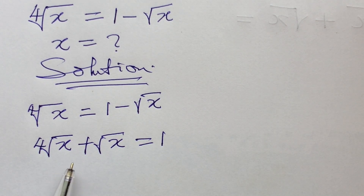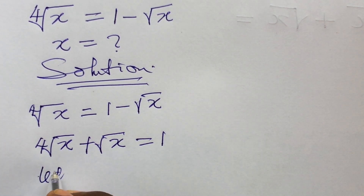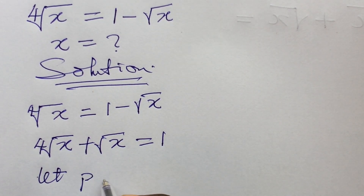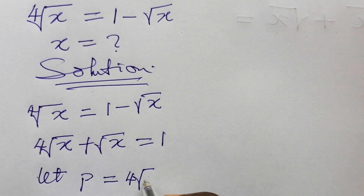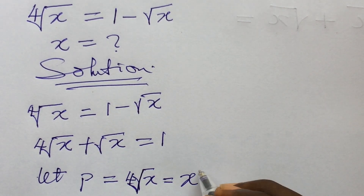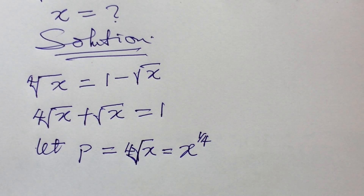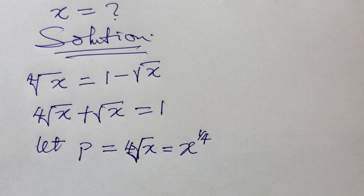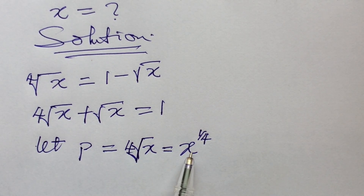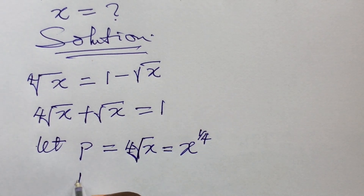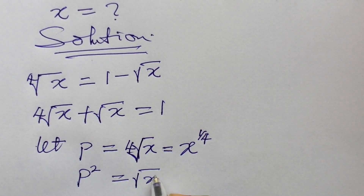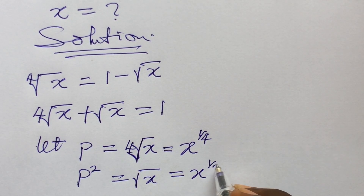We need to bring in another variable to represent the fourth root of x and the square root of x. Let p be equal to the fourth root of x, which is the same as x to the power of 1/4. If we square p, that gives us x to the power of 1/2, so p squared equals the square root of x.